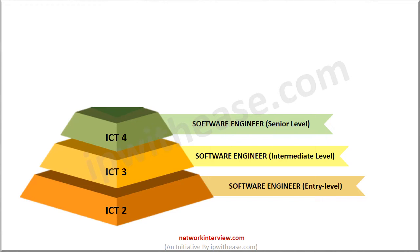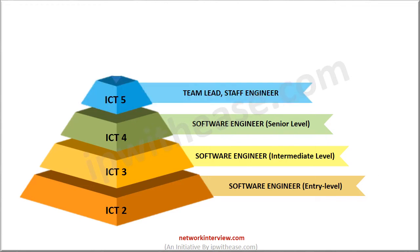The next step in the ladder is ICT5. You can compare ICT5, or software engineer 5, with the team lead or staff engineer positions. The resource at this position is a senior-level team member who mainly focuses on repair, redevelopment, testing, and related processes to ensure product efficiency and user satisfaction. The average annual salary of a staff engineer or ICT5 at Apple Inc. is $452,000.